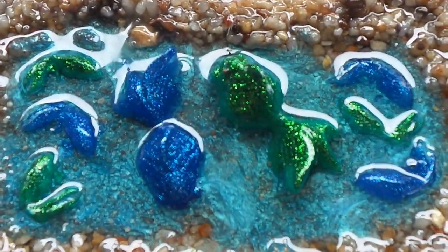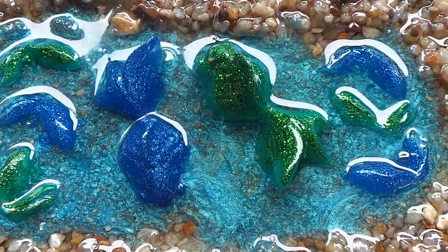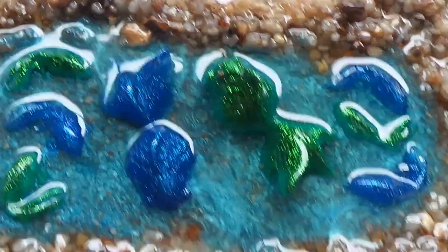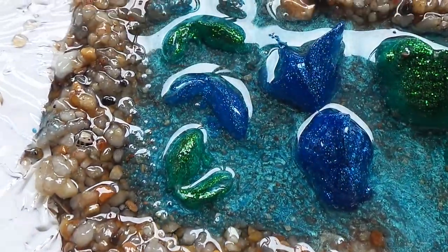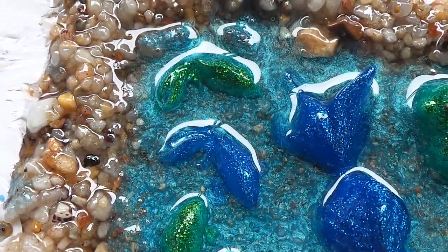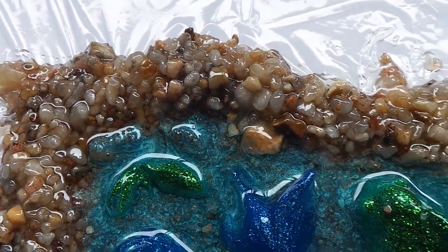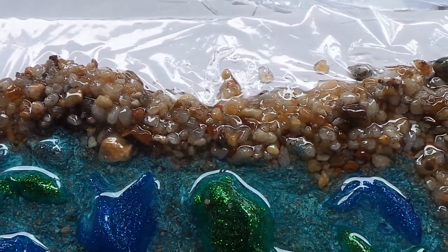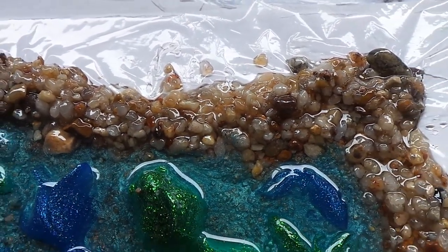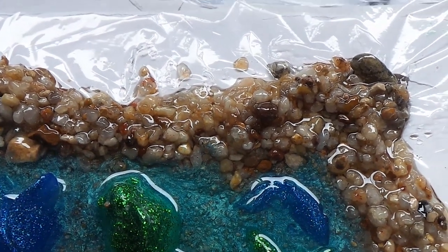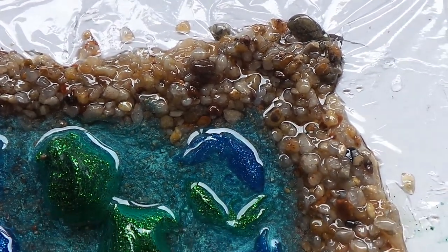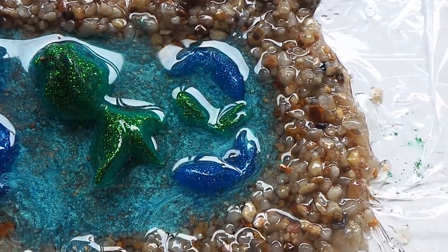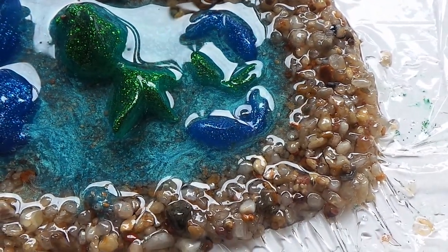So there we go, have a look. You can see the sparkles in the fish and my little stones from the beach. All sorts of things in there, bits of agate and other types of semi-precious things.